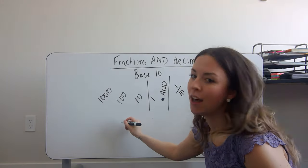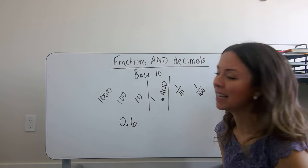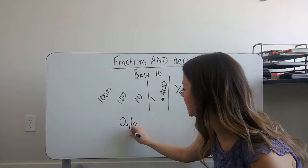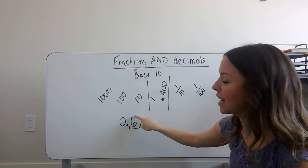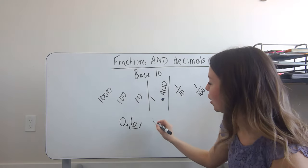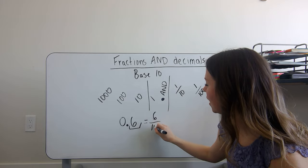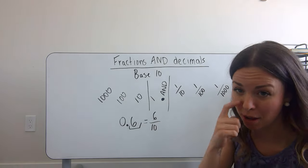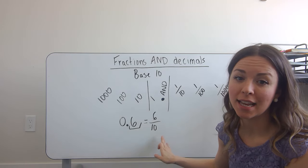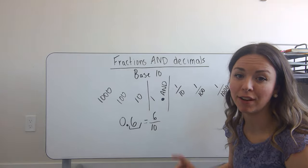If we have a decimal like 0 and 6 tenths, I know it's 6 tenths because I say the number by itself and then say the place value of the last digit, which is the tenths place. So this fraction is actually going to be a 6 in the numerator and a 10 in the denominator. Zero and 6 tenths as a decimal is the same as 6 tenths, or 6 over 10, as a fraction.